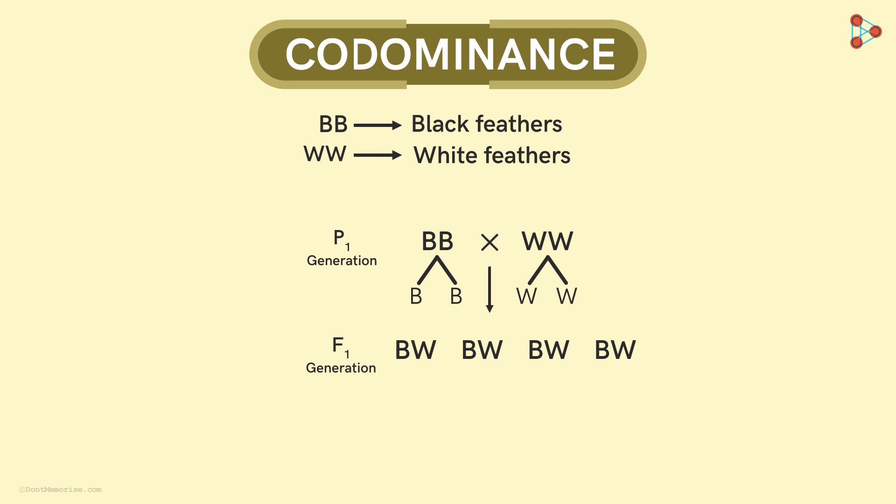As a result, we get both the characters expressed in all the offsprings phenotypically. Thus, all the chicken have checkered or in other words speckling feathers. Now this is like an exception to Mendelism, but not totally.